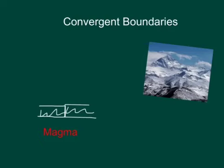The Andes Mountains and the Cascade Mountains have both formed because of oceanic-continental subduction. Finally, there's the continental-continental collision. This is where two continental plates move towards each other, and neither subducts. They both knuckle up and collide and build mountain ranges, like the Himalayas right over here. As they do this, they also cause earthquakes.